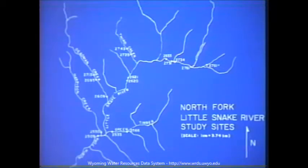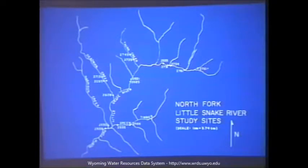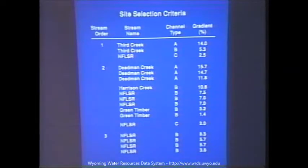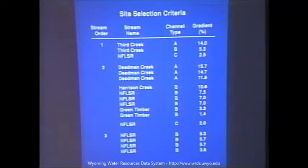We conducted our analysis on the North Fork Little Snake River drainage and selected 17 sites. Nine of those sites are on the main stem North Fork to look at longitudinal variation in habitat. We supplemented these with eight sites on tributary streams to look at various habitats there as well. We selected sites on the basis of stream order, channel type, and gradient to represent the types of habitats that actually occur in that drainage. The drainage has first, second, and third order streams. In the first and second order streams there are also A, B, and C channel types; in the third order streams, only B channels are represented.